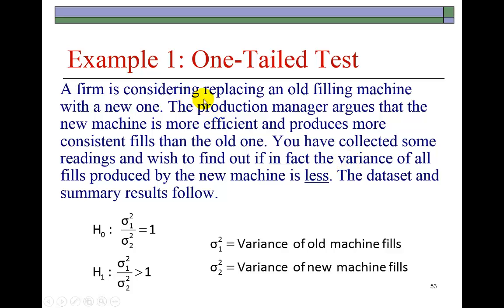Look at this example. It says a firm is considering replacing an old filling machine with a new one. The production manager argues that the new machine is more efficient and produces more consistent fills than the old one. You have collected some readings and wish to find out if, in fact, the variance of all fills produced by the new machine is less. Keyword, less. So if we denote the variance of the old machine as σ₁² and that of the new machine as σ₂², then if we are trying to find out that variance of the new machine is less, then we're going to have to put the σ₁² on top so that by rejecting the null hypothesis of equality, we're going to be concluding that the variance of the new machine is less.